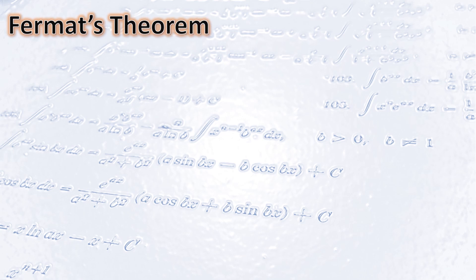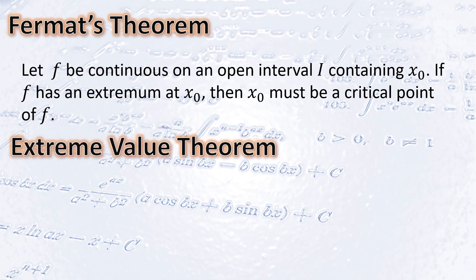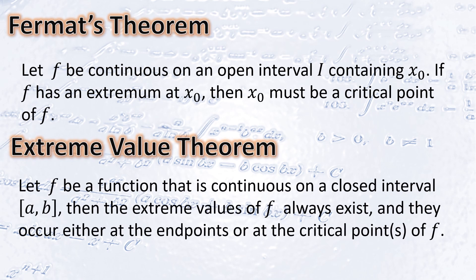Let us proceed to some important theorems. Fermat's Theorem: Let f be continuous on an open interval I containing x₀. If the function has an extremum at x₀, then x₀ must be a critical point of f. Next, the Extreme Value Theorem: Let f be a function continuous on a closed interval [a, b]. Then the extreme values of f always exist, and they occur either at the endpoints or at the critical points of the function. We will use these theorems to find the extreme values on [a, b].